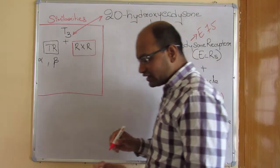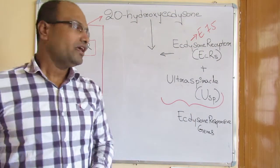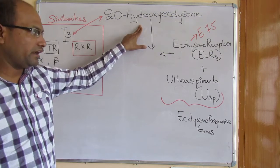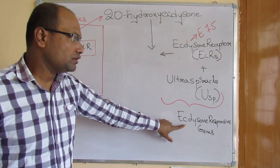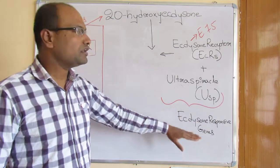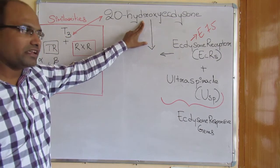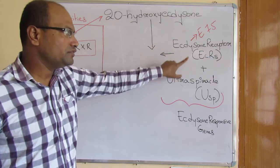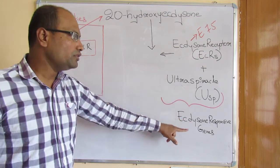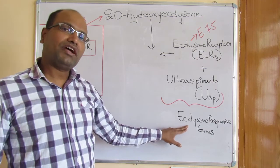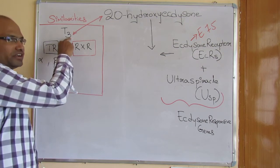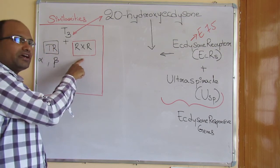When the hormone is not present, the complex binds to a repressor called E75. E75 is a transcriptional factor that represses the activity of ecdysone-responsive genes. When 20-hydroxy ecdysone is present, it binds to the EcR-USP dimer on the DNA, activating the ecdysone-responsive genes. Similarly, in the thyroid hormone case, binding of T3 to the TR-RXR complex activates thyroid hormone-responsive genes.